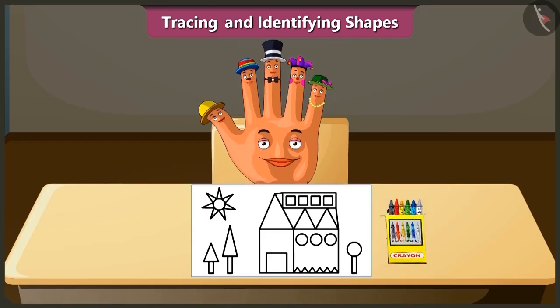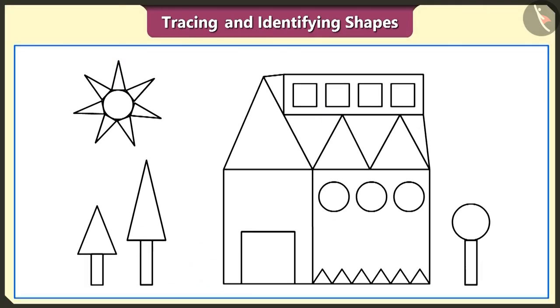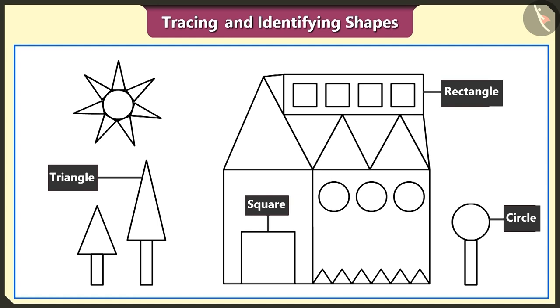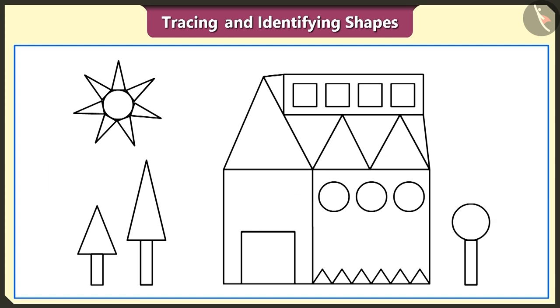Friends, let's see the second example now. Look, this is a figure made by tracing square, rectangle, circle and triangle shapes. Let's fill this figure with colors.